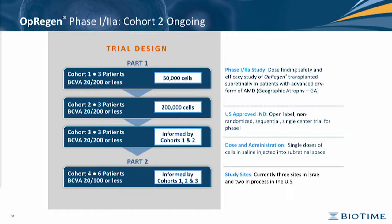Now we are moving into cohort 3, which will be informed by the previous two. We are going to inject a smaller volume to allow microperimetry testing to search in a very defined area. Cohort 4 will then be informed by cohort 3, in which we can probably extend the treatment to a larger population and with better vision outcomes.